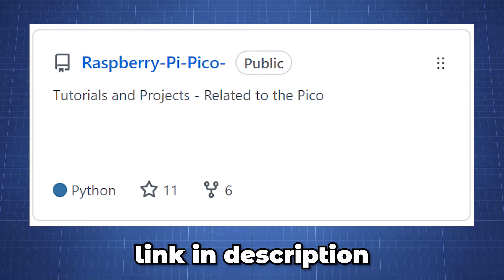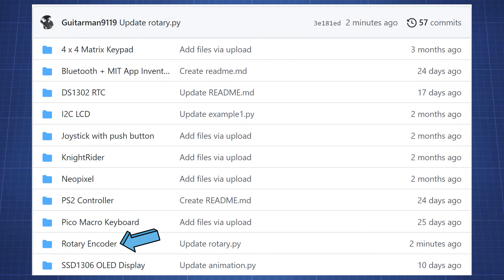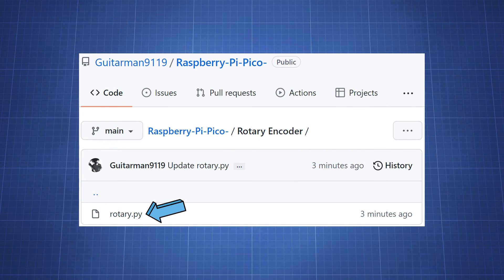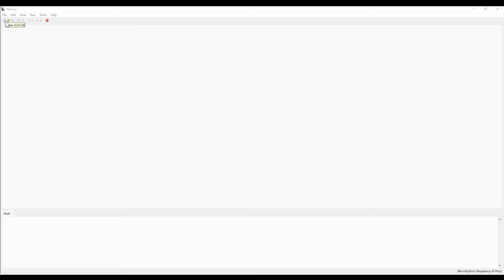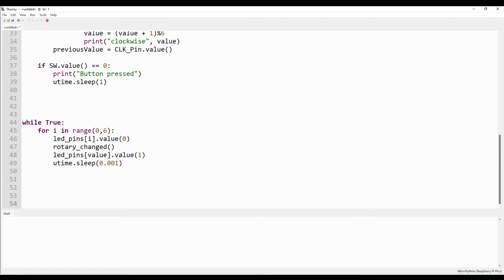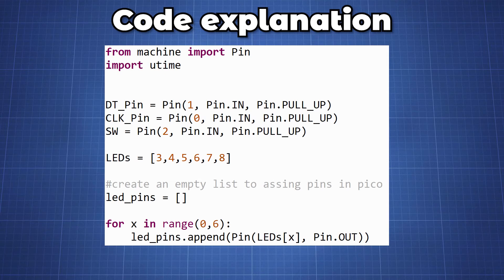The code for this example is available in my GitHub repository, link given in the description. Open the rotary encoder folder, open rotary.py and copy all the code inside. In Forni create a new file and paste the code. Let's take a quick look at the code together.